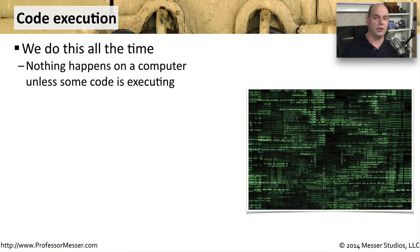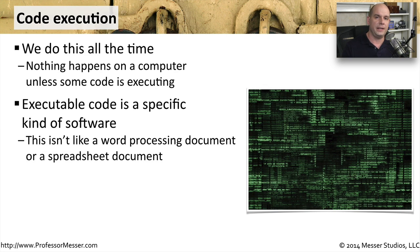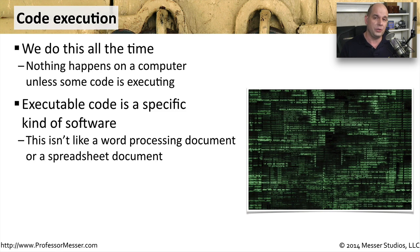When we run an application on our computer, we are executing code. Nothing happens on your computer unless you have some application, some program running and executing in memory. This executable code is a very specific kind of program designed to perform certain actions on your computer. This is not the spreadsheet you're using or a word processing document — it's the program you use to edit the document or manipulate numbers within the spreadsheet.